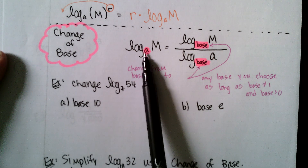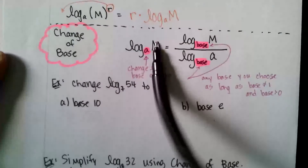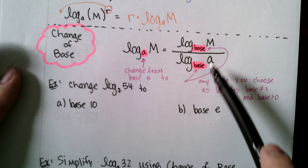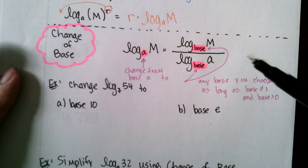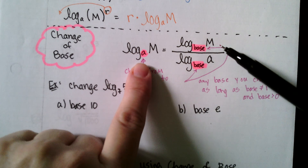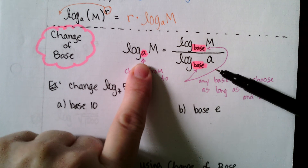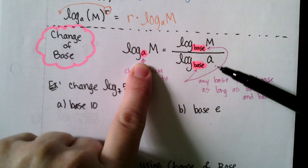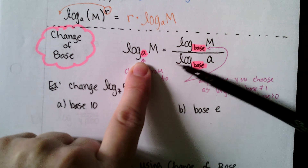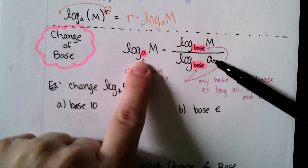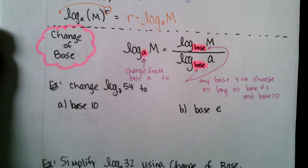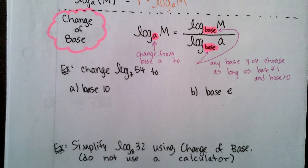So log base a of m turns into the quotient of two logarithms: log base b of m divided by log base b of a, where b is your chosen new base. Let's look at an example.